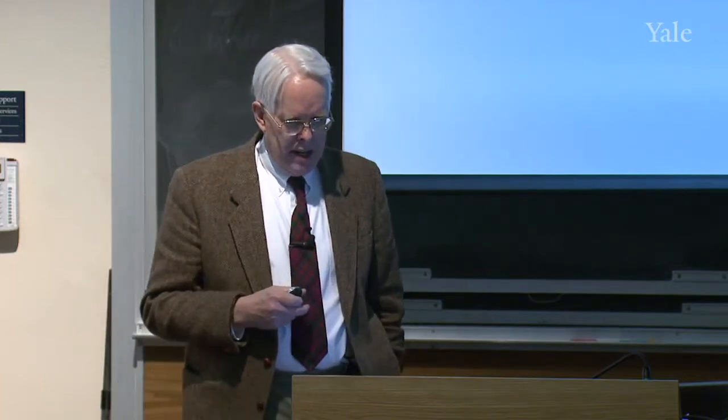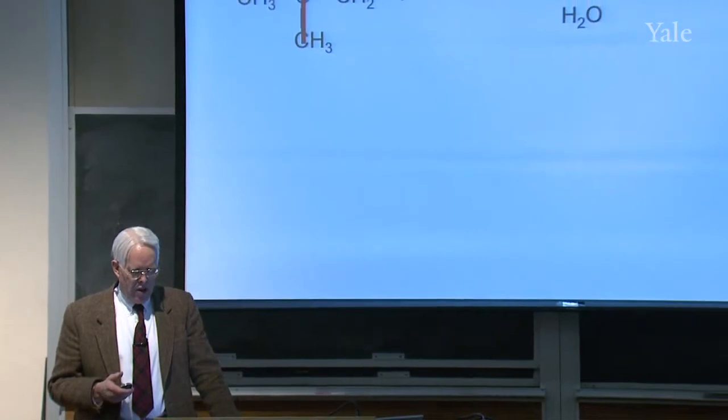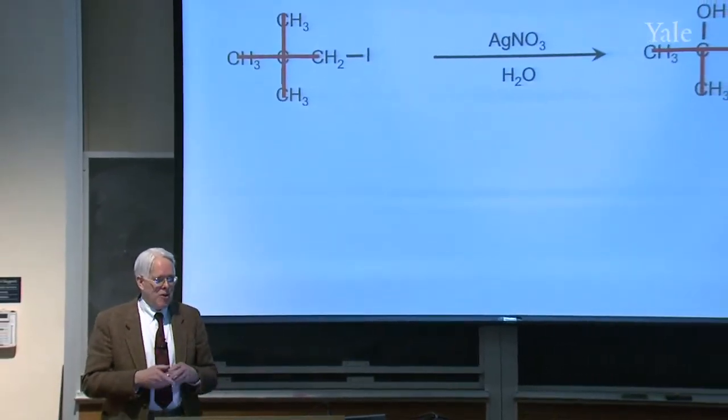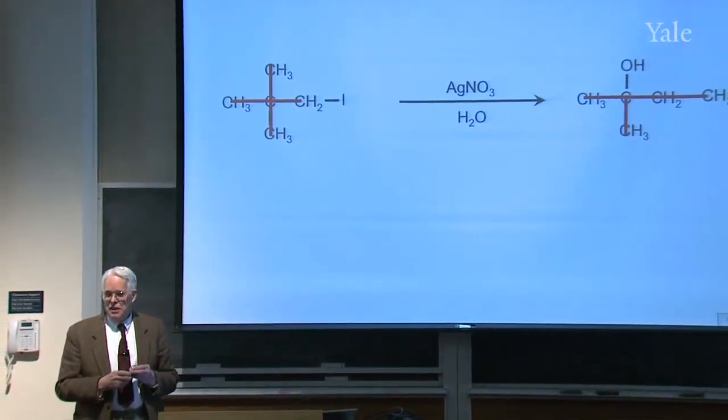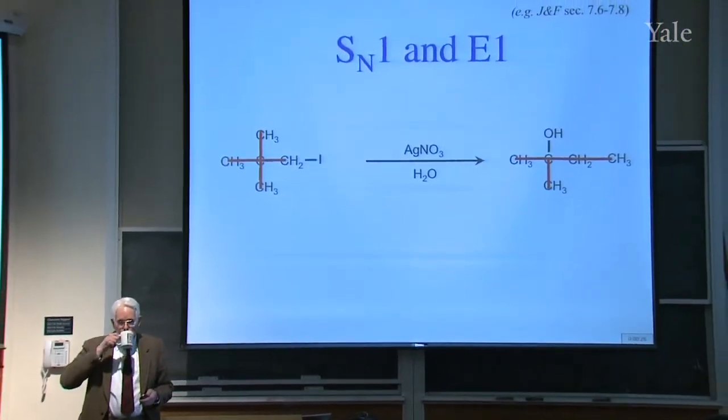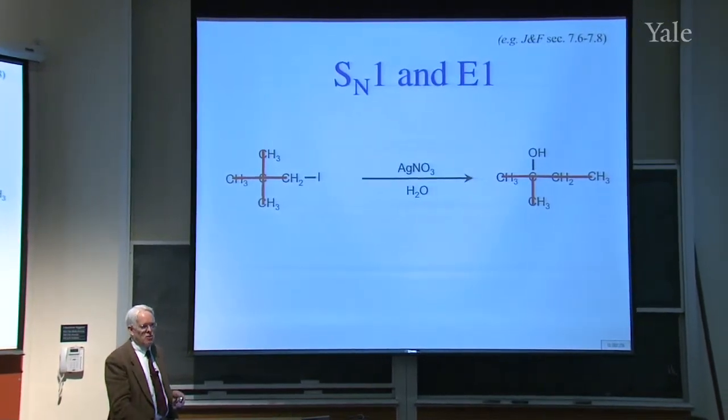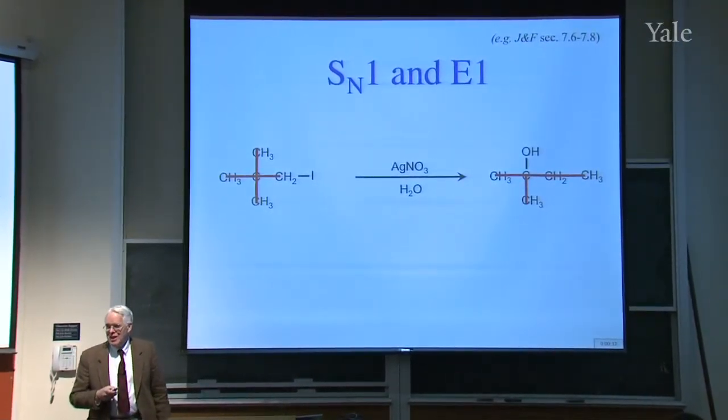Last time we got started on the silver assisted substitution reaction of neopentyl iodide. Notice something interesting. If we look at those red crosses that trace the carbon skeleton of the starting material and the product, what do you notice about the carbon skeleton? Does it look like a normal substitution?